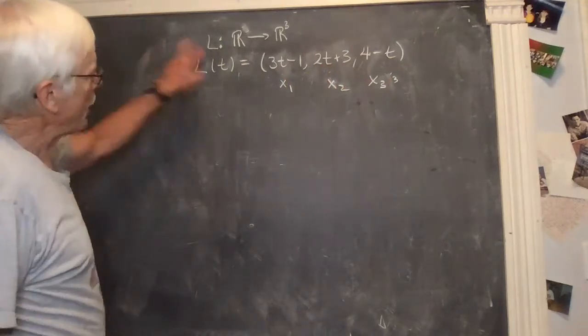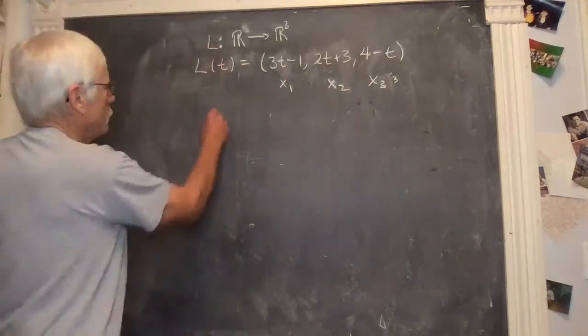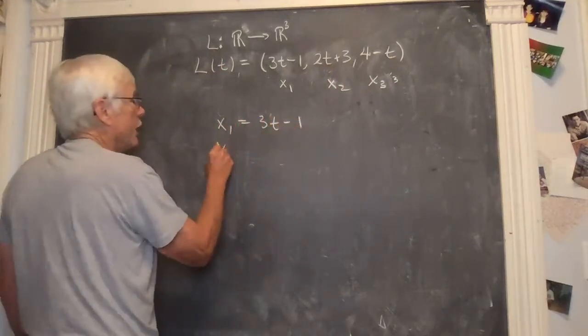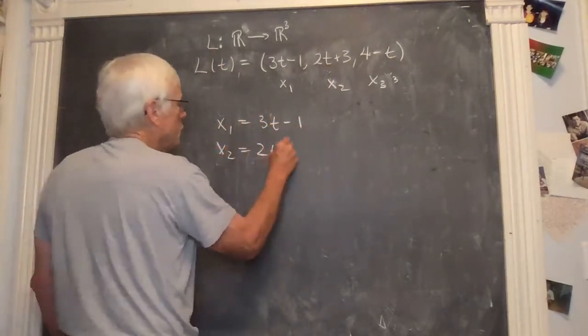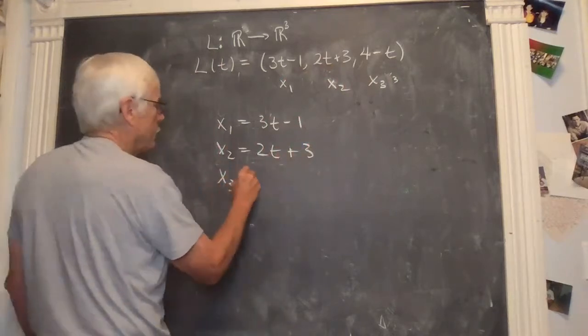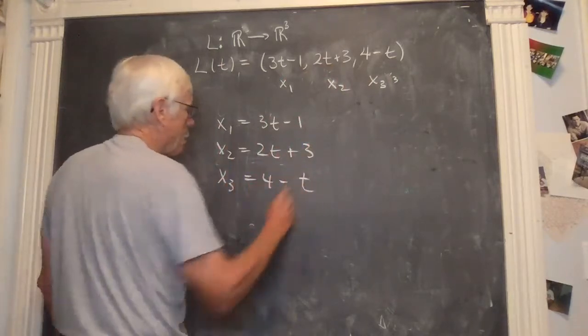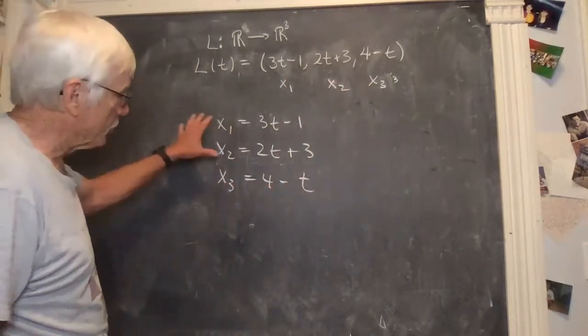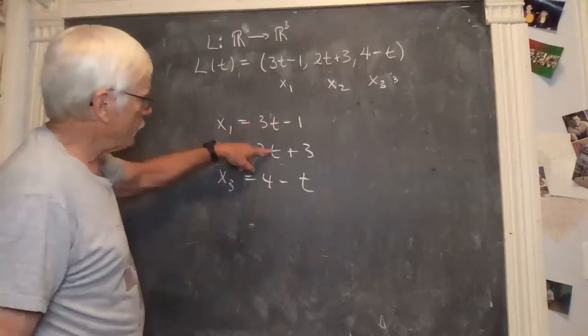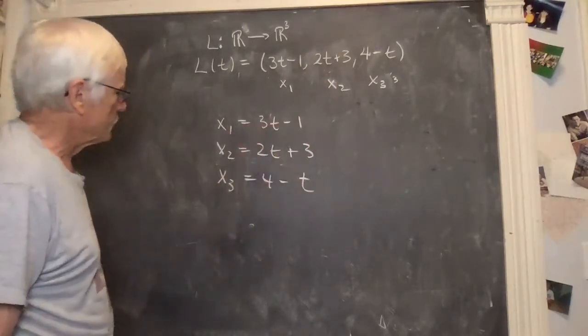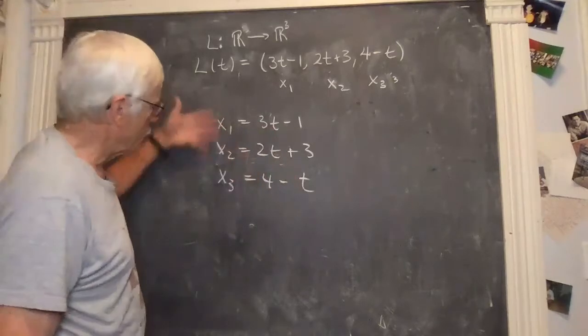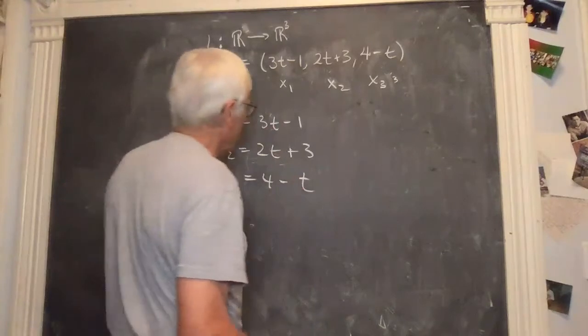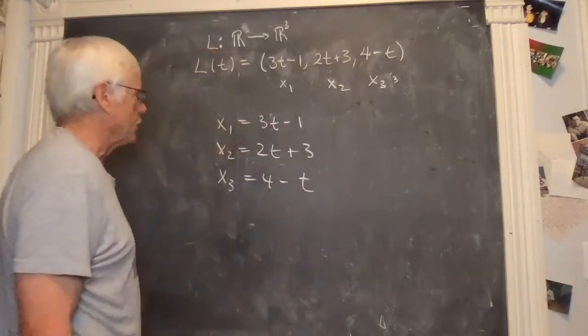So what this parametric equation is telling you is that x1 is 3t minus 1, and x2 is 2t plus 3, and x3 is 4 minus t. And these equations are a system. So this is the same t in each one.